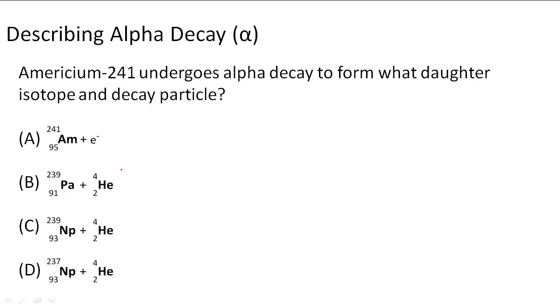Describing alpha decay. So in this problem it says americium-241 mass number undergoes alpha decay to form what daughter isotope and decay particle?